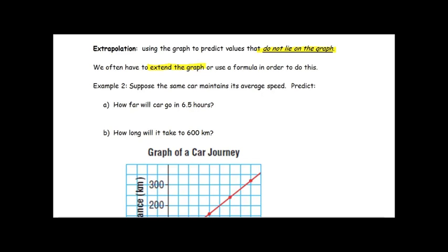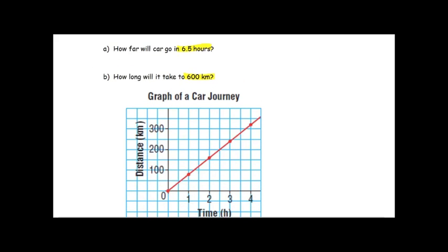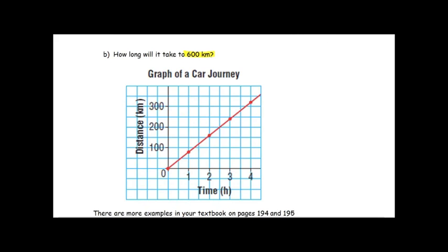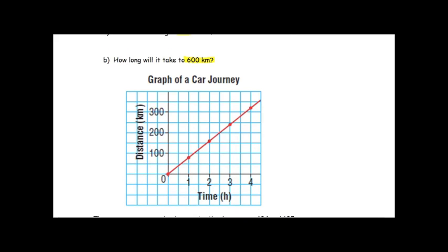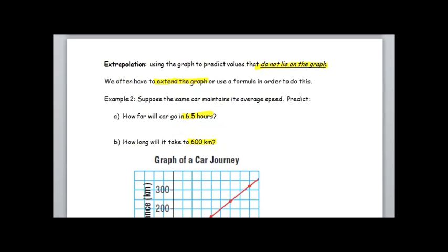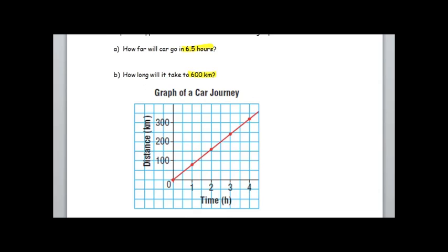Example number two: suppose the same car maintains its average speed. We're going to predict how far will the car go in 6.5 hours and then how long it will take to go 600k. So if I go down to this graph, 6.5 hours, well 6.5 hours is actually not even on this graph right.